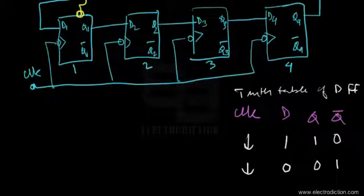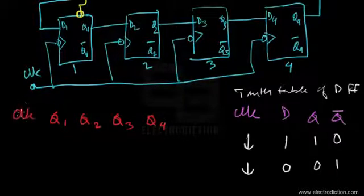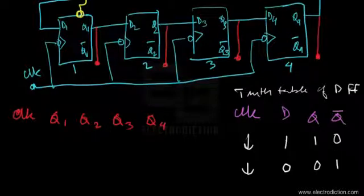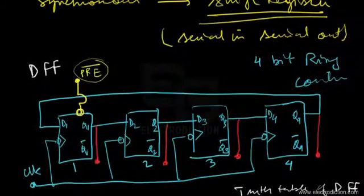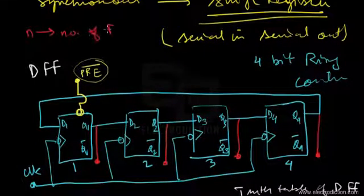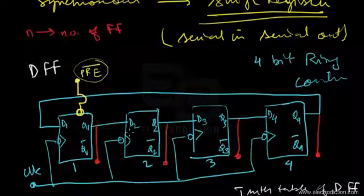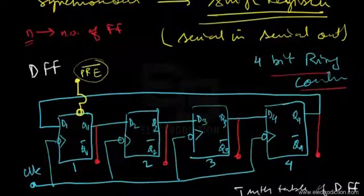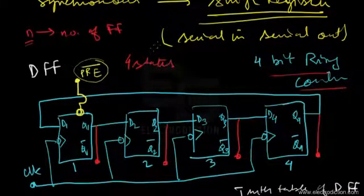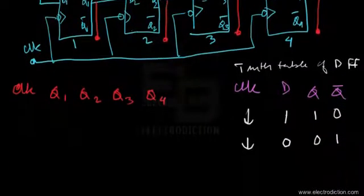Moving on to the state table of this counter, we track Q1, Q2, Q3, and Q4 across clock pulses. The ring counter can move through n states, where n represents the number of flip-flops used. Since we're using four flip-flops for this 4-bit ring counter, it moves through four states — which is why it's also referred to as a mod-4 ring counter. It is the simplest shift register counter.